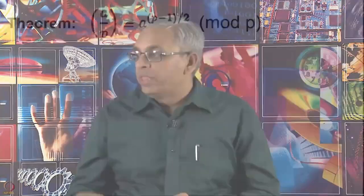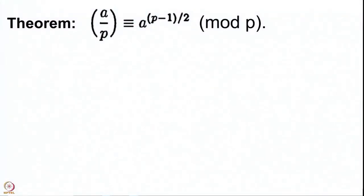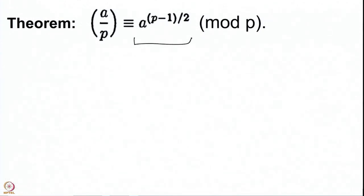In the last lecture, in the very last slide, we proved a remarkable result which tells us that the Legendre symbol a by p can be computed simply by computing a particular power of a modulo p. All we have to do is compute this power of a modulo p and then we are done. For instance, if you were to compute some Legendre symbol of a number a modulo some moderately large prime, you would only have to compute this particular power, which is also not a very difficult thing for a computer to compute.